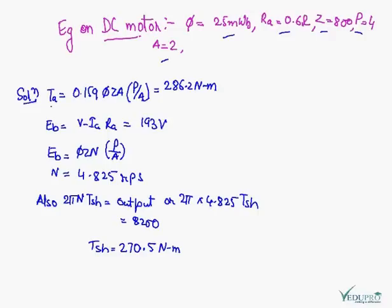So the formula for torque is this. Substituting the values we get the answer. Eb is V minus IA RA. Putting the values here we get this. Eb is ΦZN P upon A. From this Eb we can calculate N because the rest of the things are given and Eb we have calculated here. So N comes out to be this. Also 2πN TSH is given by this, and TSH we will get using this relation.